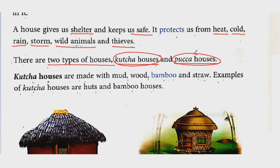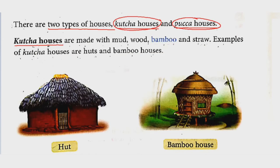See the first type: kaccha houses. Kaccha houses are made with mud, wood, bamboo and straw. Aisi houses jo gili mitti, lakdi, bamboo ya straw se bani hoti hain unko hum log bolte hain kaccha houses. Examples of kaccha houses are huts and bamboo houses.